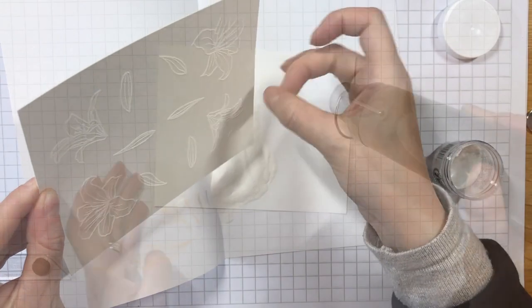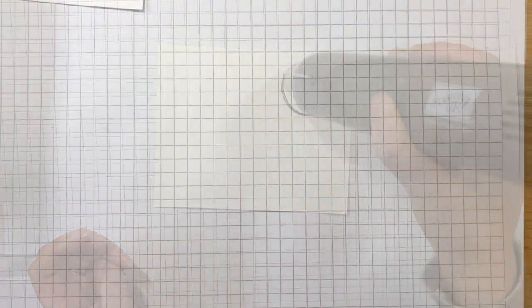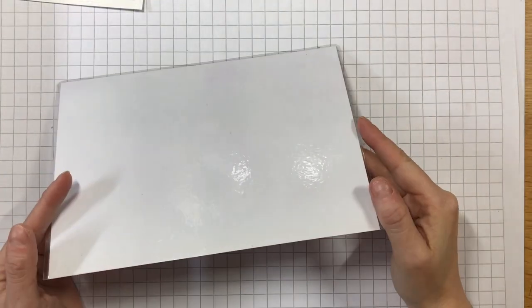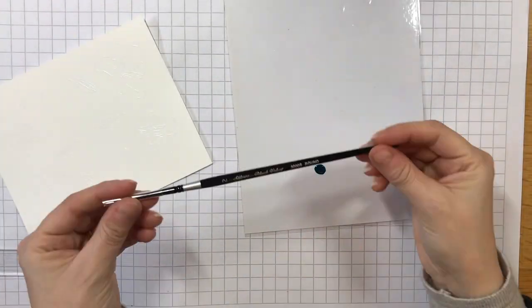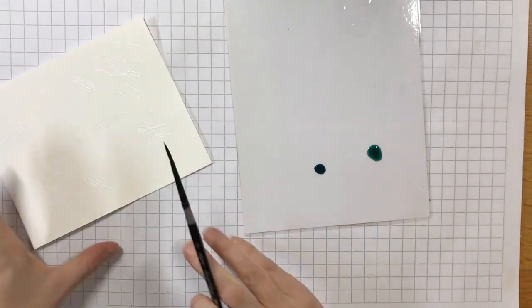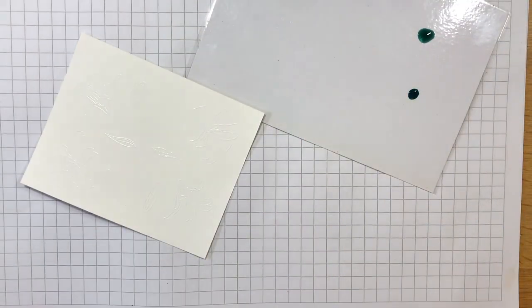Once all the images are embossed, they're ready to be painted. A long time ago, I laminated a few pieces of A5 cardstock which I keep next to me at all times. They're perfect for using as palettes for when I'm ink blending or watercoloring, and they just wipe clean when you're done, ready for next time.